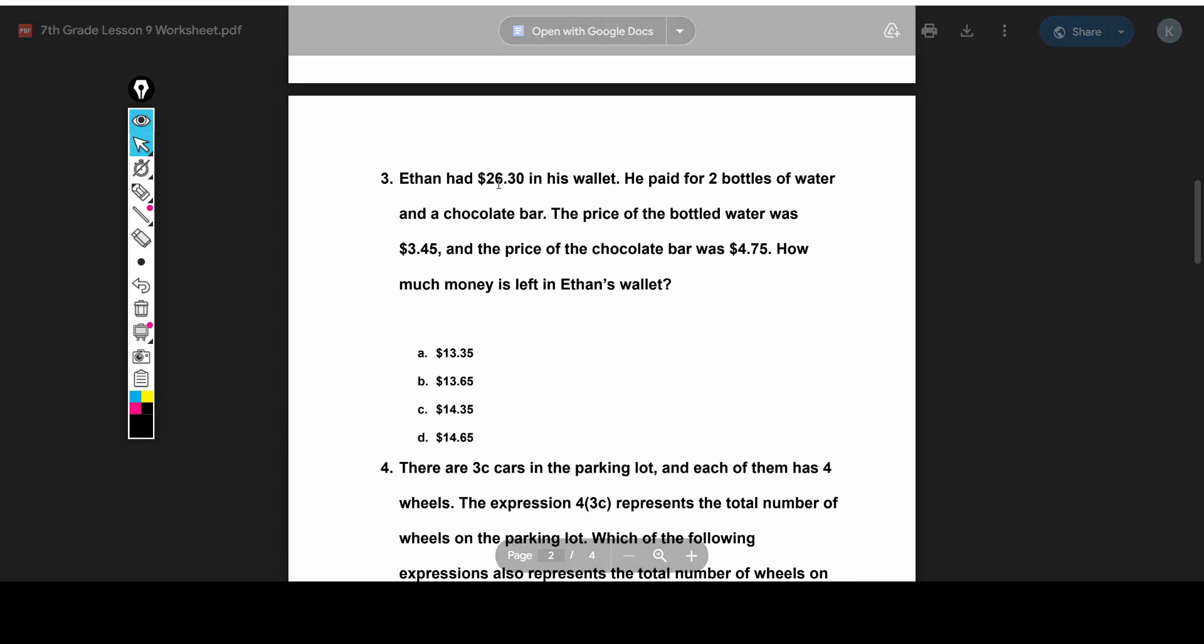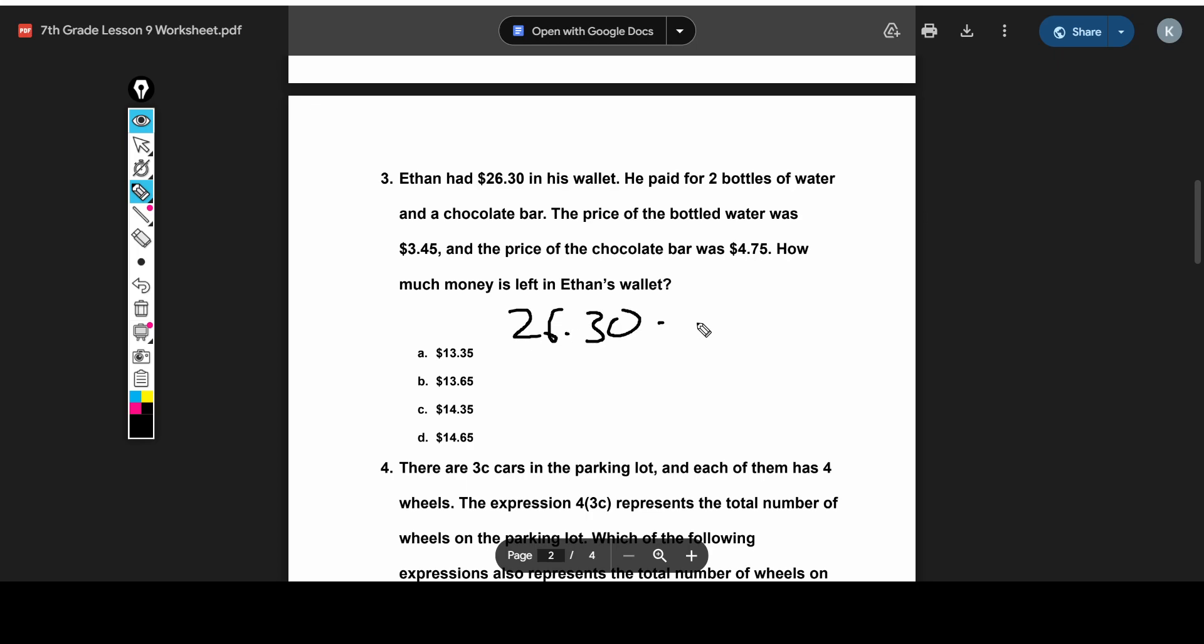For the next question, we have $26.30 in Ethan's wallet originally. And then he buys two bottles of water and a chocolate bar. And since each bottle of water is $3.45, and the price of the chocolate is $4.75, we want to find how much Ethan has left. So we start with $26.30, and then we subtract how much he pays. And how much he pays is two times the price of the water, which is $3.45. And then you add the price of the chocolate bar, and he only buys one. So that's $4.75.